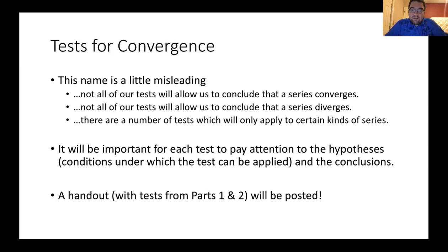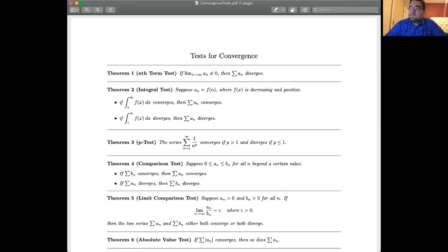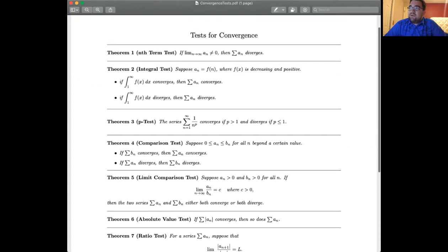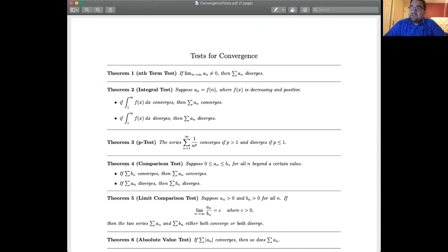As a summary, we're going to go through each of these tests one at a time along with some examples. I'm going to post a handout that has all the tests combined onto one sheet of paper from part one and part two. It's a handout titled 'Tests for Convergence' — I'll post this, and it's a really nice reference as you work with these. You may want to print it off or copy it into your notes so you can annotate them — for example, noting that a certain test only allows you to conclude divergence.